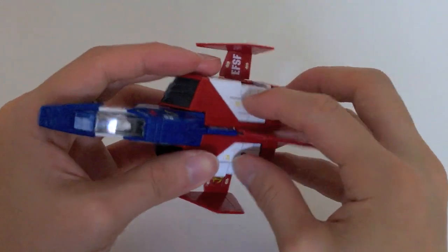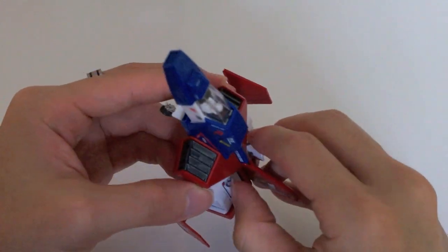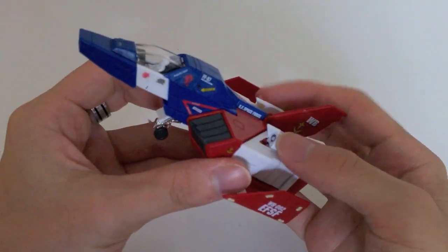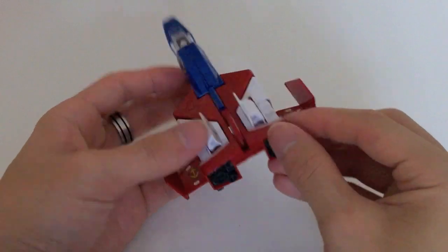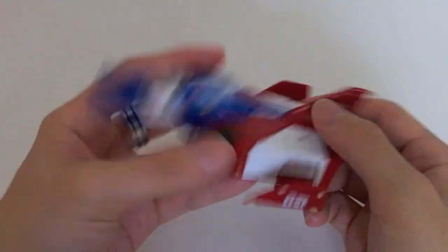You have flip up missile bays on both sides. And in my opinion, in my experience dealing with RX-78 kits, these have been the easiest to open. I haven't messed with the 1/35th Hard Graph one yet, but this one's really good.